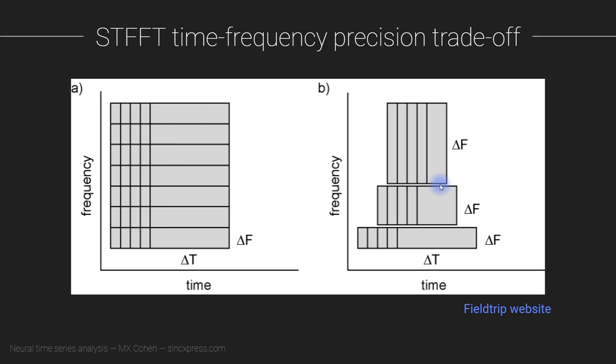That said, the results of the short-time Fourier transform will generally look really, really similar to the results of complex Morlet wavelet convolution. And the results of the short-time Fourier transform will look a lot like the results of the filter-Hilbert method.